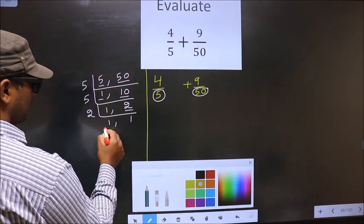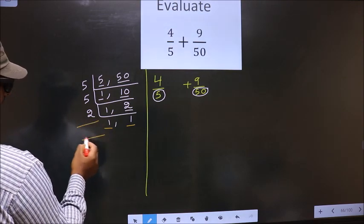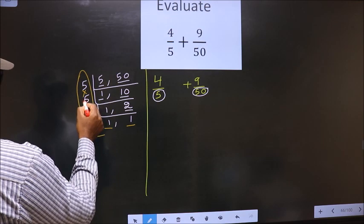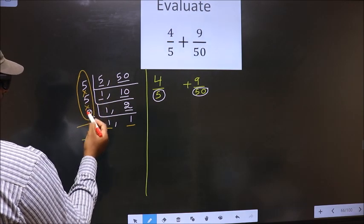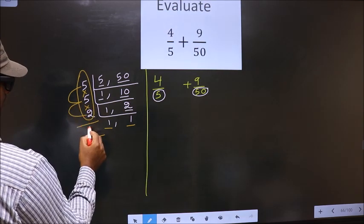We got 1 in both the places. So our LCM is the product of these numbers. That is 5 into 5 into 2. So 5 into 5, 25 into 2, 50.